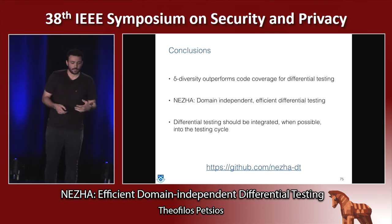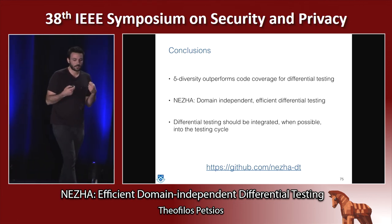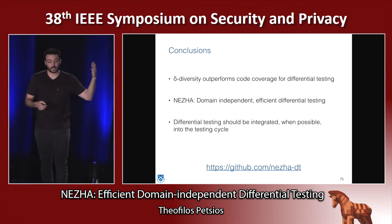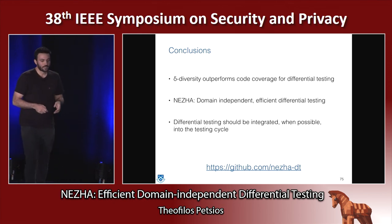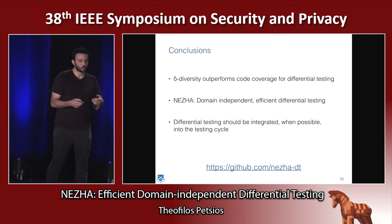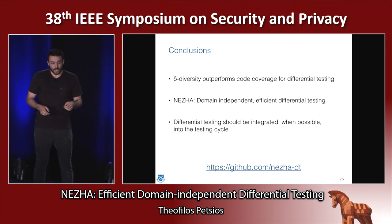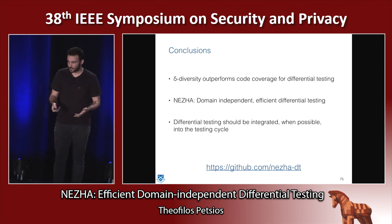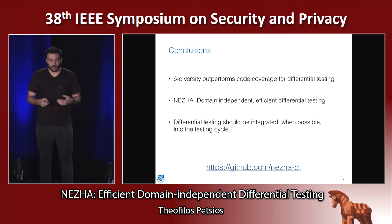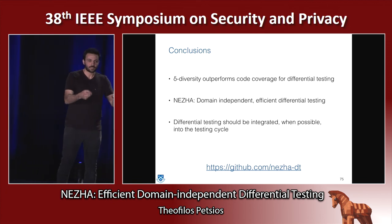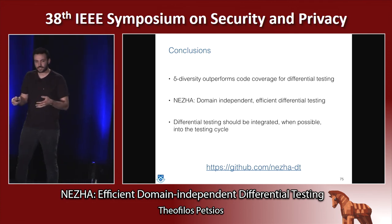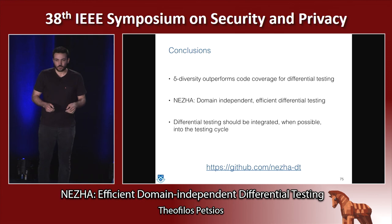The main takeaway conclusions are that differential diversity is a good way to guide input generation for differential testing and outperforms code coverage. We also provide Neza, our open-source framework on GitHub, so you're welcome to try it out and fuzz your programs. If you have the ability to perform differential fuzzing — say if you're developing an SSL library — there's no reason not to also perform differential testing rather than simply fuzzing a single application, because you can catch all the semantic bugs together with the crash-inducing bugs.